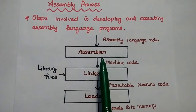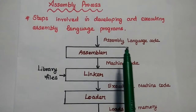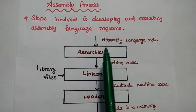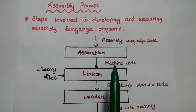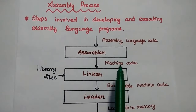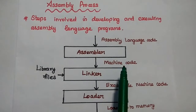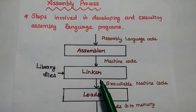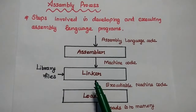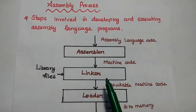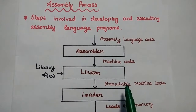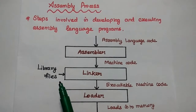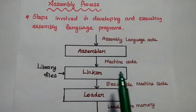Let's start with the assembler. The assembly language program is given as input to the assembler. It translates that assembly language into machine code. Machine language is nothing but binary or object code. Next, that is given as input to the linker. The linker is a special type of program which converts that machine code into executable machine code by appending the values of library files for that object code.